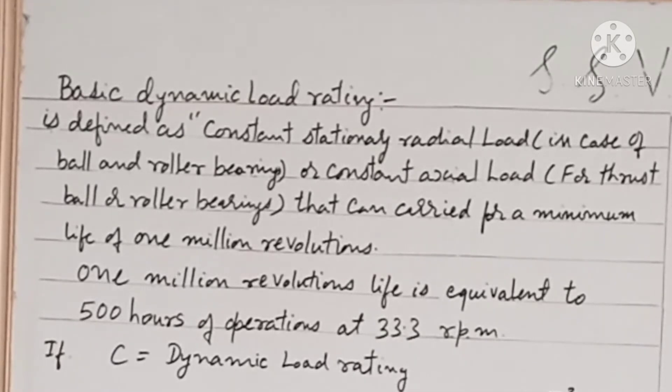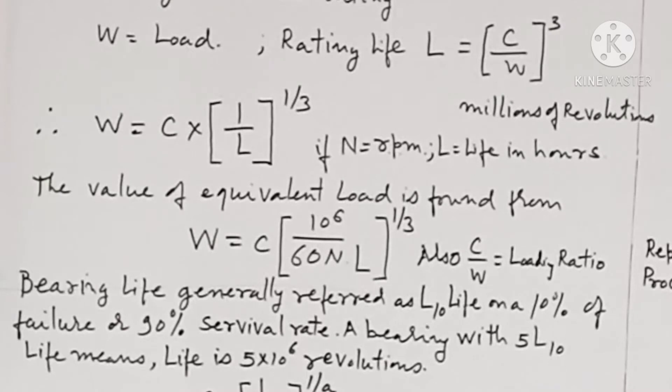One million revolutions life is equivalent to 500 hours of operations at 33.3 RPM. If C is the dynamic load rating and W is the load...